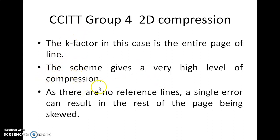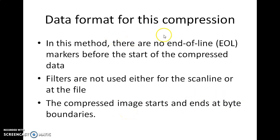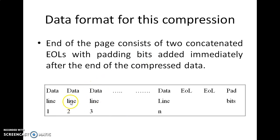This gives a high level of compression since there are no embedded reference lines; however, a single error can result in the rest of the page being skewed. For data formatting: there are no end-of-line (EOL) markers before the start of compressed data, filters are not used for scan lines or at the file level, and compressed image starts and ends at byte boundaries. The end of the page consists of two concatenated EOLs with padding bits added immediately after the compressed data.